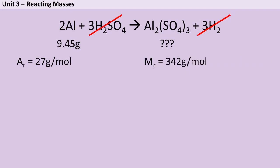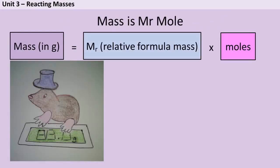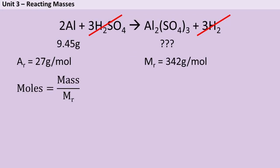So once I've got both of those relative masses, I can start using my favourite chemistry equation, mass is MR times mole, to work out how many moles of aluminium I have. So the mass given to me in the question was 9.45 grams. And the relative mass, which in this example is strictly speaking an AR rather than an MR, is 27. So I do 9.45 divided by 27, and I find out that that gives me 0.35 moles of aluminium.